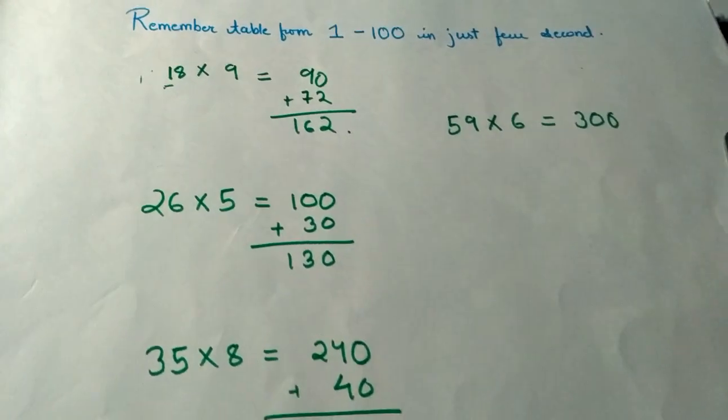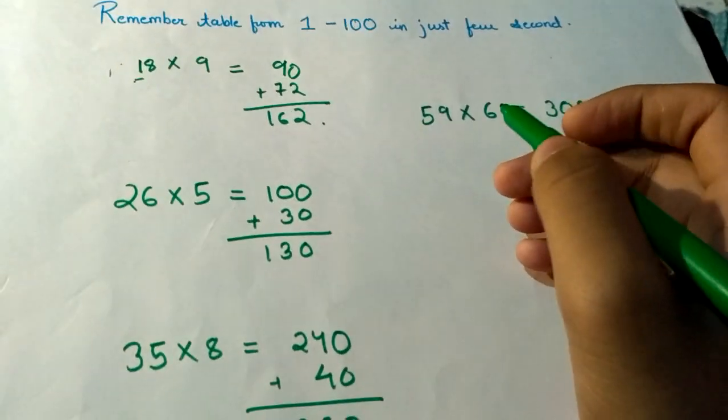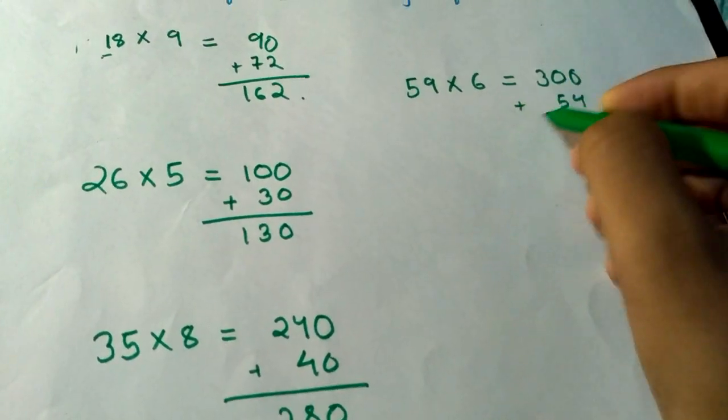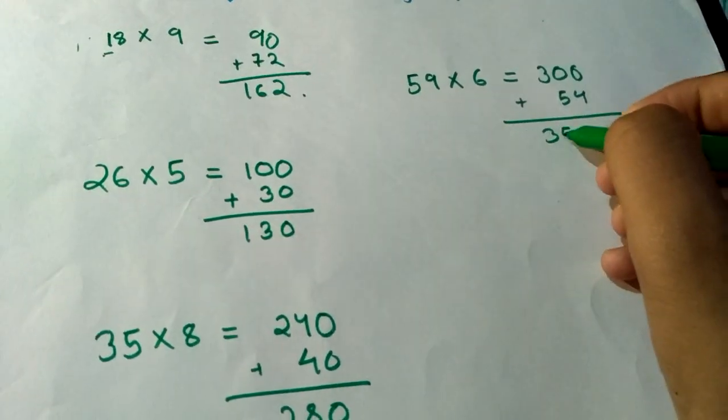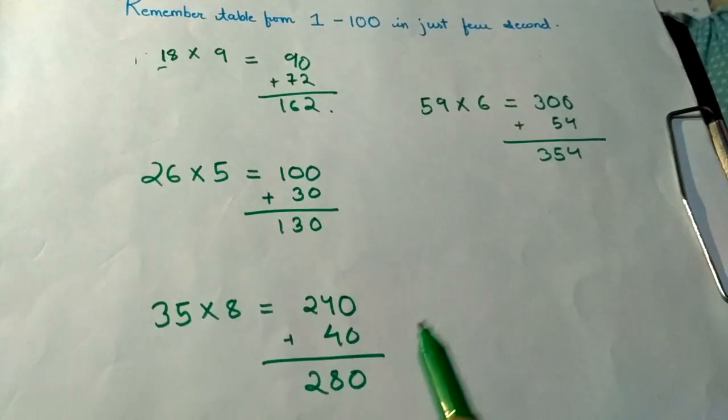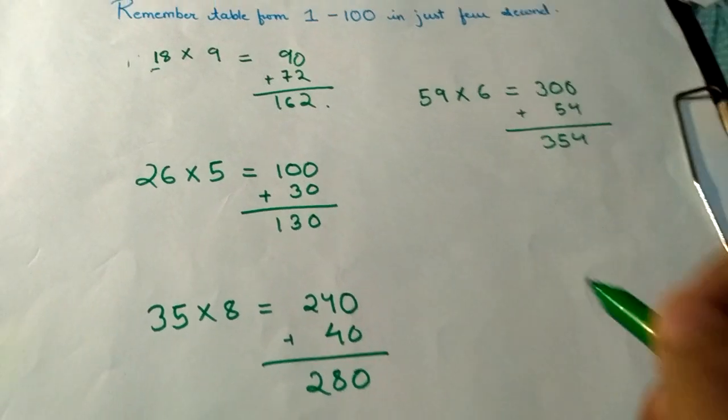Now 9 × 6 = 54, so 300 + 54 = 354. It is a very easy process. You can use this formula to calculate big numbers.